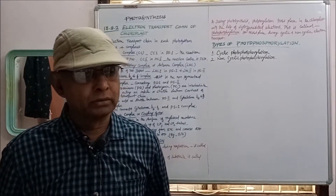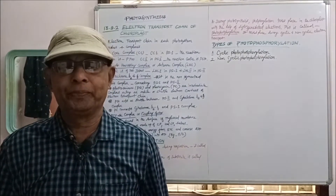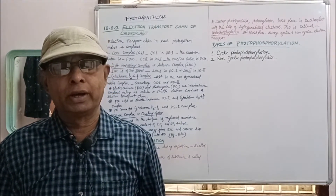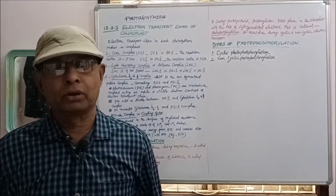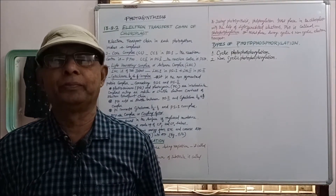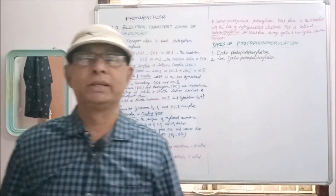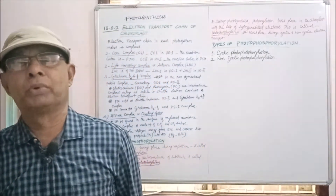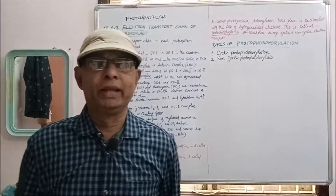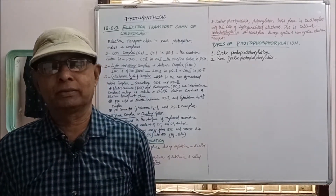Number one: core complex, referred to as CC. Number two: light harvesting complex or antenna complex, referred to as LHC. The third one is the cytochrome B6F complex, and the fourth one is the ATPase complex or coupling factor.